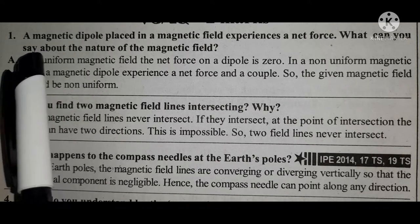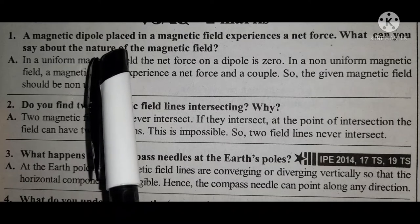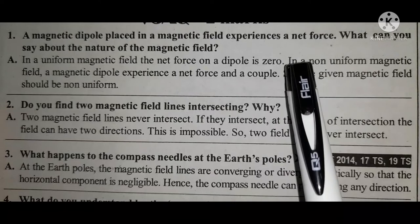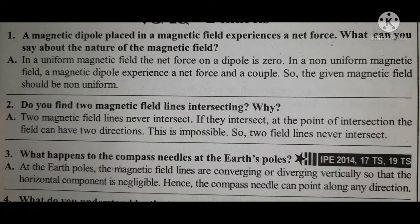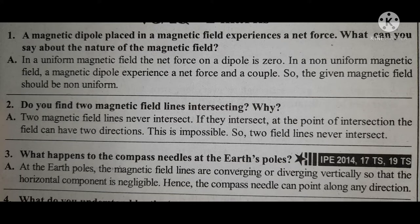Question one: A magnetic dipole placed in the magnetic field experiences a net force — what can you say about the nature of the magnetic field? As you know, a magnet has a north and south pole. The answer is: for a uniform magnetic field, the net force on the dipole is zero, whereas for a non-uniform magnetic field it experiences a net force as well as a couple. So the given magnetic field should be non-uniform.